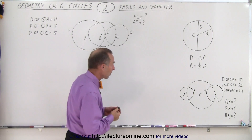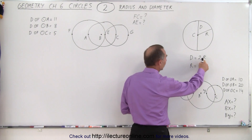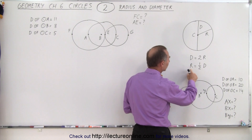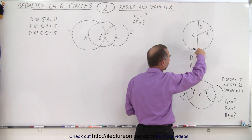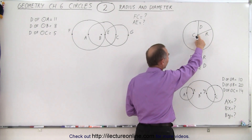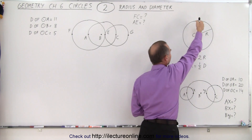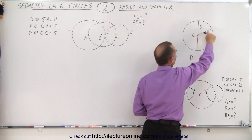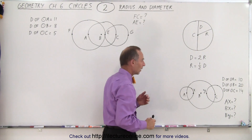We have to remember that the diameter is twice the radius, and the radius is one-half times the diameter. We've notated that as: C for the center of the circle, D for the diameter of the circle, and R for the radius of the circle.